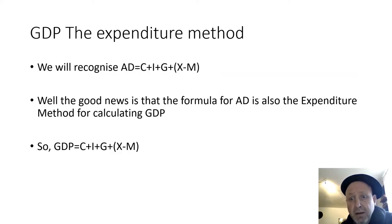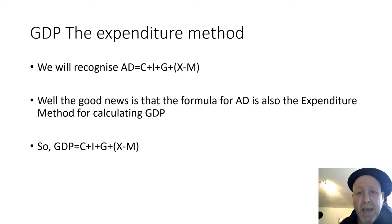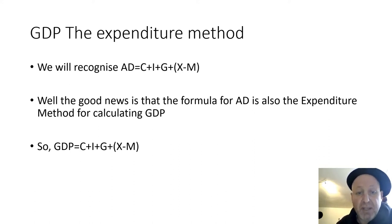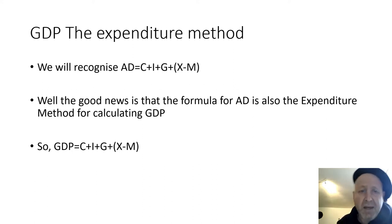GDP using the expenditure method. You'll recognize that AD equals C plus I plus G plus X minus M. C is for consumption, I is for investment, G is for government spending, X is for exports, and M is for imports. The good news is that the formula for AD is also the expenditure method for calculating GDP. So GDP equals C plus I plus G plus X minus M.